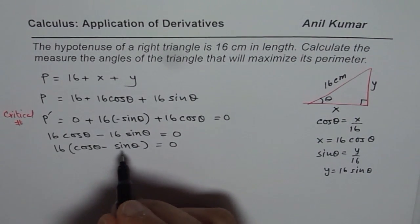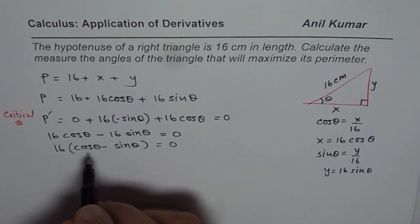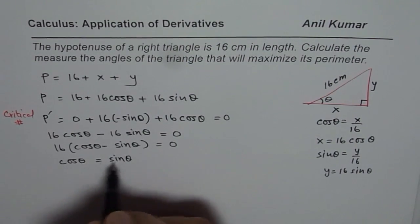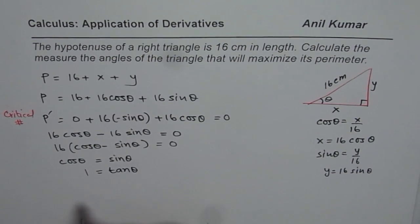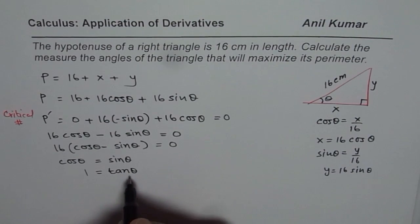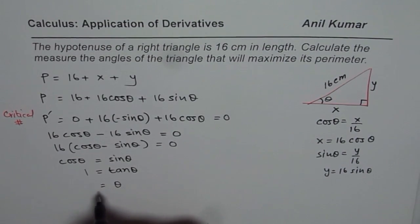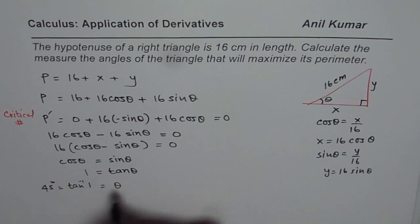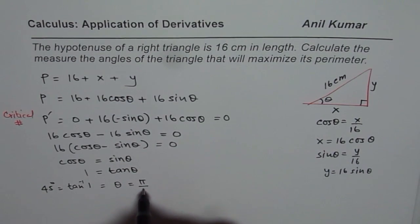We could write cos theta equals to sin theta. And from here we can say theta equals to tan inverse of 1, which is indeed 45 degrees or pi by 4.